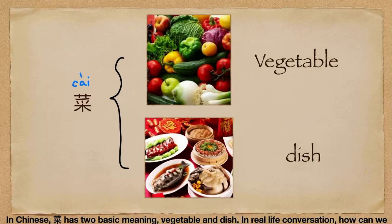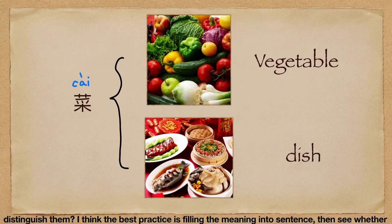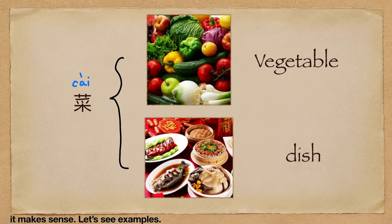In Chinese, 菜 has two basic meanings: vegetable and dish. In real-life conversation, how can we distinguish them? I think the best practice is filling the meaning into a sentence, then see whether it makes sense. Let's see examples.